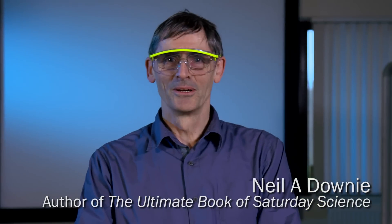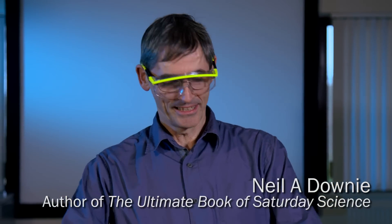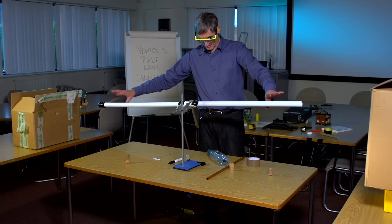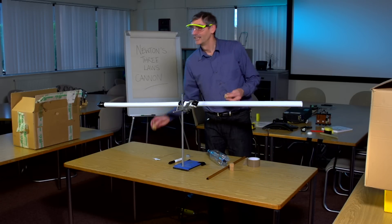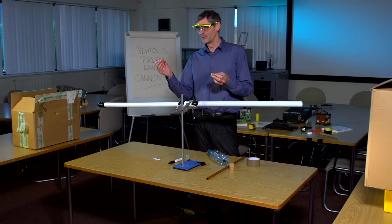This is the three laws cannon. We've got a couple of launch tubes which can launch two projectiles in opposite directions, but we're going to start by showing a normal cannon operating by projecting a projectile from this barrel only. We've blocked off this end of the barrel with tape and a cork.